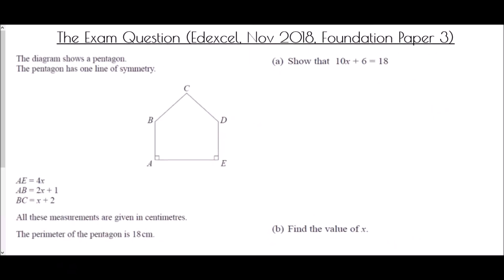We're going to end with an exam question from the NXGL paper, November 2018, Foundation Paper 3. The diagram shows a pentagon with one line of symmetry. AE = 4x, AB = 2x + 1, BC = x + 2 (all in centimeters). The perimeter of the pentagon is 18 centimeters. Show that 10x + 6 = 18.